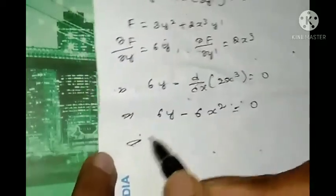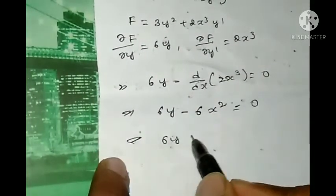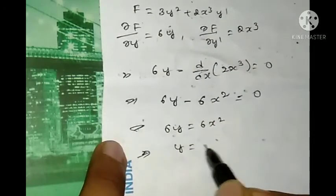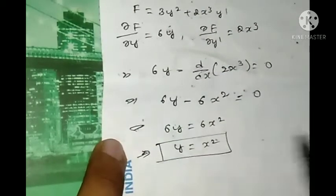So 6y = 6x², then the 6's get cancelled, we get y = x². Then they give y(α) = 1.